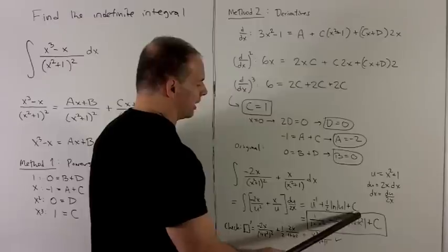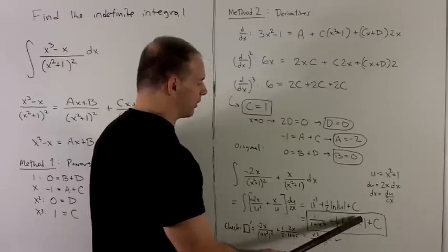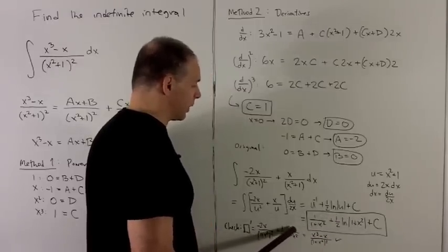we just take what's on the inside, put it in the bottom, then multiply by the derivative of the inside. So it gives me a 2x.